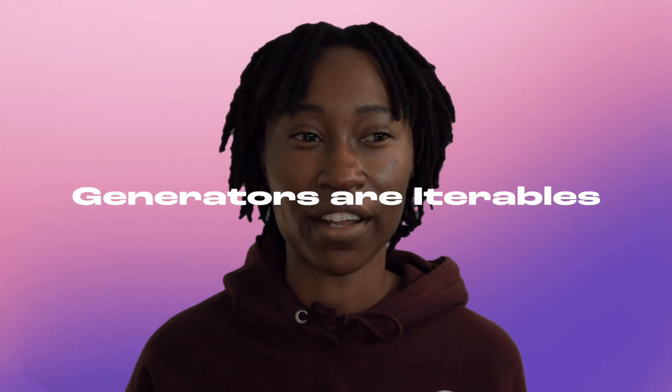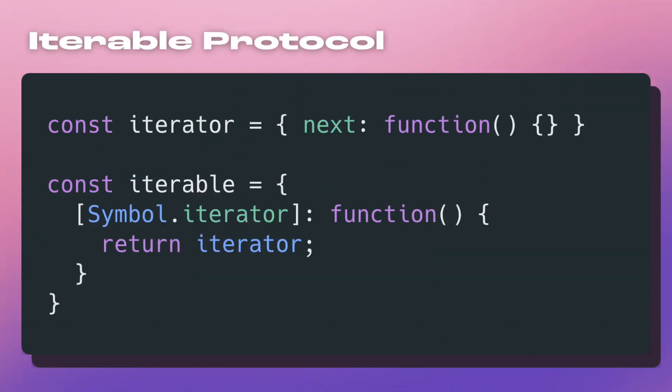But a generator kicks it up a notch by also following the iterable protocol. For anything to be iterable in JavaScript — meaning if you pass that iterable into a for-of loop, it will be able to step through it like strings and arrays — it needs to assign a method that returns an iterator to a symbol.iterator key. So a generator streamlines all the features that developers want when making an iterator object or making something iterable. You can have the generator act as an iterator object or just create a generator and pass it into loops.